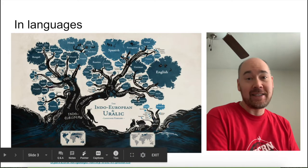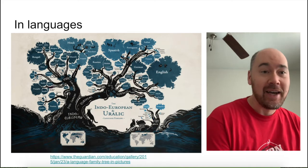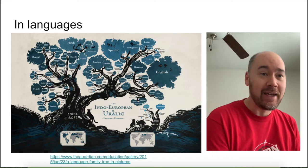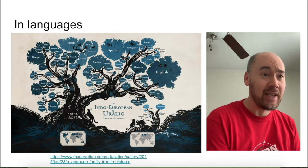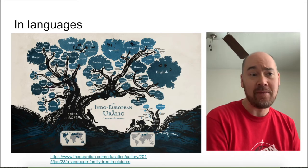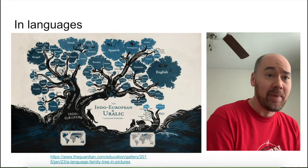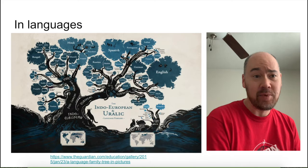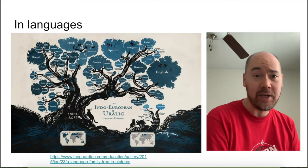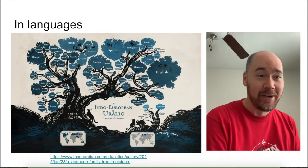A similar phenomenon can be observed in languages. You've got languages like English, German, Spanish, Hindi, just going around the outside of this tree. You see Bengali and Punjabi around the far side, and Persian, which is also called Farsi. You might not think of these languages as related, but actually these languages are all part of the same family, called the Indo-European family.